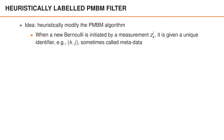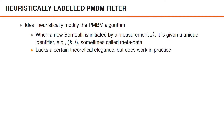At this point, a tempting and simple idea to get around this problem is to just ignore the theory and to use some heuristic modification of the PMBM algorithm. So for example, when a new Bernoulli is initiated by a measurement set with index J, it can be given a unique identifier such as the tuple K, J. Sometimes this is called the metadata for the initiated Bernoulli. And this metadata or label would then remain constant over time. This does lack a certain theoretical elegance, but it does work in practice.